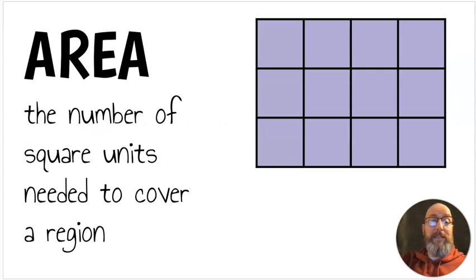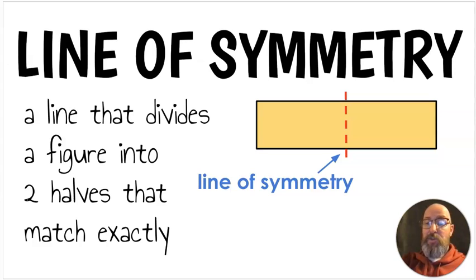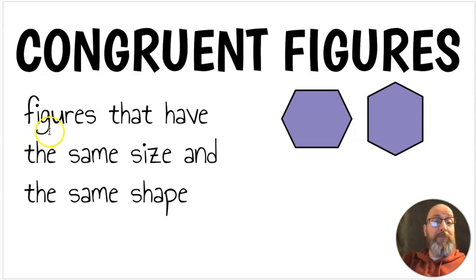Area is the number of square units needed to cover a region. We have a rectangle here with four columns and three rows, and that area would be 12 square units because 3 times 4 is 12. Next, we have a line of symmetry. A line of symmetry is a line that divides a figure into two halves that match exactly. That means they're the same size. So this rectangle has a line of symmetry. Both sides are the exact same. Think about a butterfly. Congruent figures are figures that have the same size and same shape. Both of these are the same size and the same shape. The reason I put them here is I just turned this one, but they're still the same shape and the same size. That makes them congruent.